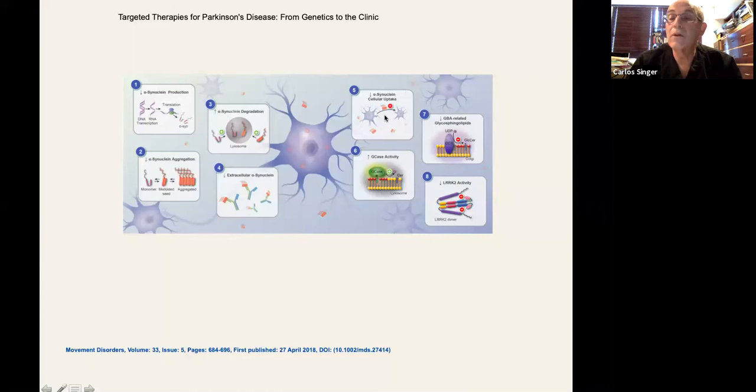You could also promote the activity of the glucocerebrosidase enzyme, and this is actually currently under study as a clinical trial. Or in the case of the LRRK2 genetic mutation, those who harbor this mutation, you could try to decrease the excess tyrosine kinase activity that is caused by this mutation.